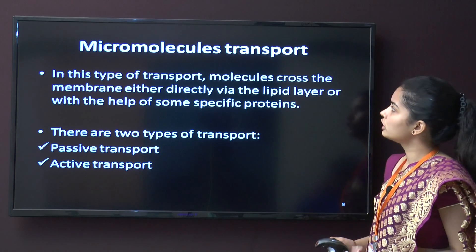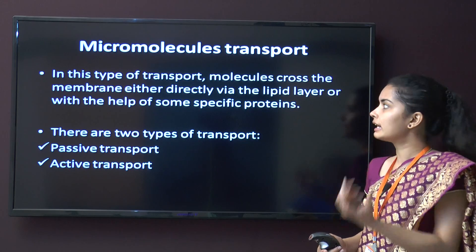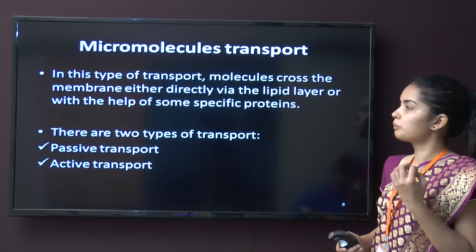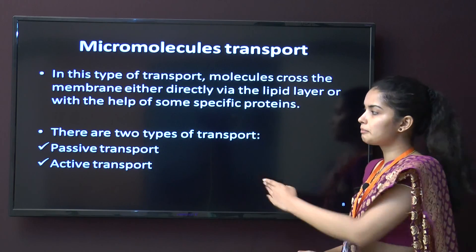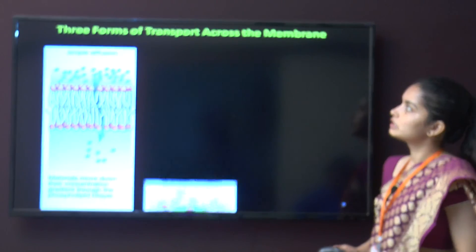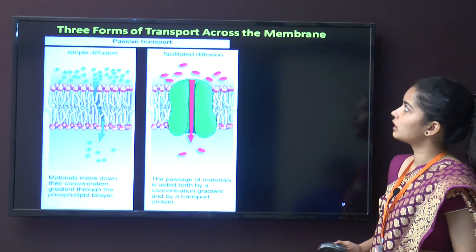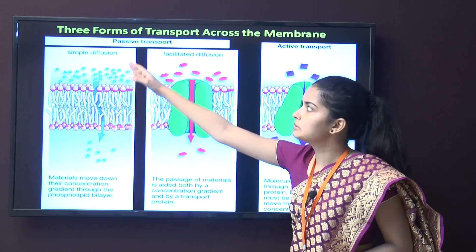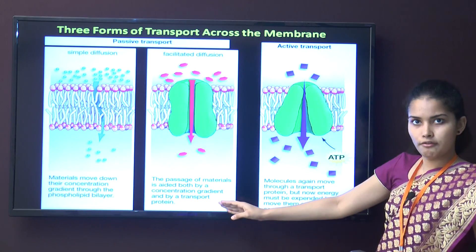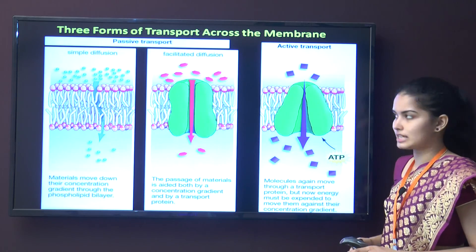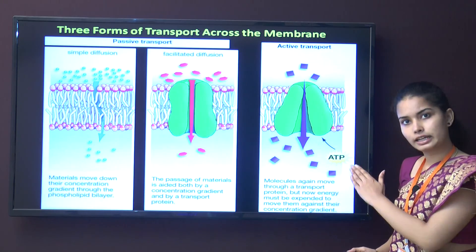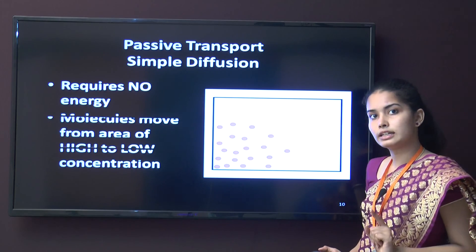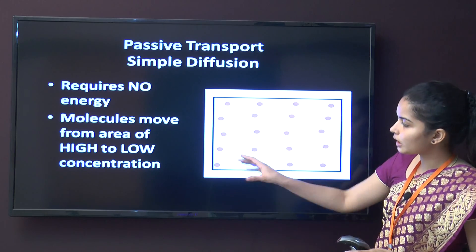In micromolecule transport, molecules pass across the membrane directly via the lipid layer with the help of some specific proteins. This can be of two types: passive and active. The forms of transport are passive transport — which includes simple diffusion and facilitated diffusion — and active transport, which requires ATP.